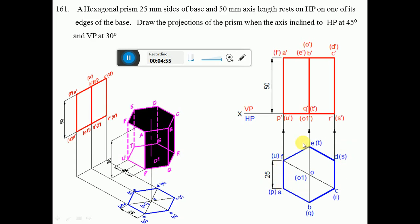Once you get all six points, join them with dark lines: A to B, B to C, C to D, D to E, E to F, and F to A — completing the hexagon. Join two diagonals, such as B to D and F to C, to intersect at the center point O and O1 in brackets. Since PQRS is at the base, project PQRSTU onto the XY line. PQR is near to the observer, so P dash, Q dash, R dash is visible, and S dash, T dash, U dash becomes invisible, and O1 dash becomes invisible.